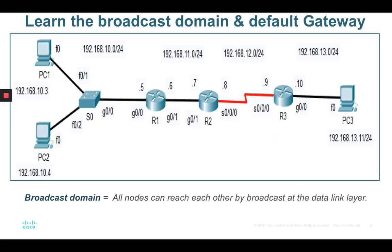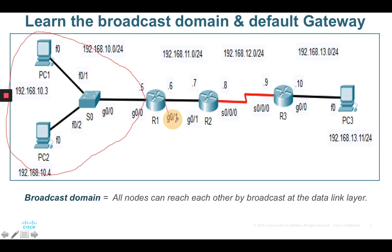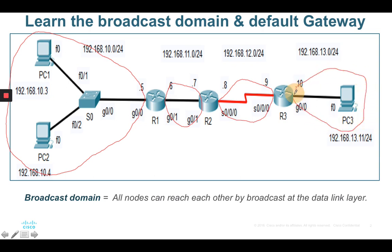Now let's identify how many broadcast domains you can find from this diagram. As covered in the previous session, you should be able to answer — you will get four broadcast domains. Router 1 connecting to PC1 and PC2 will form one broadcast domain. Router 1 to Router 2 will have another broadcast domain. Router 2 to Router 3 will form another broadcast domain, and Router 3 to PC3 will have another broadcast domain.